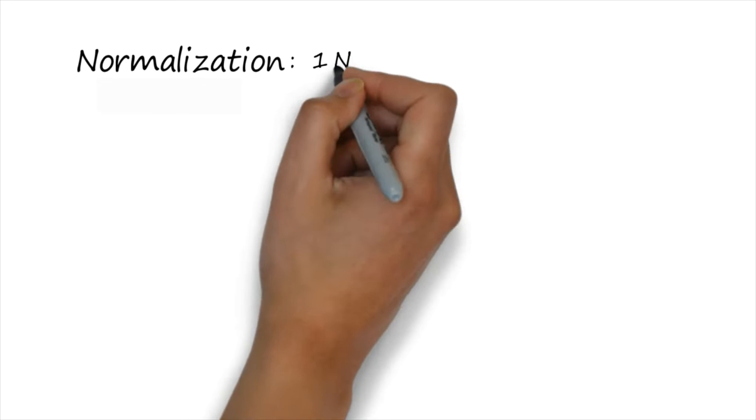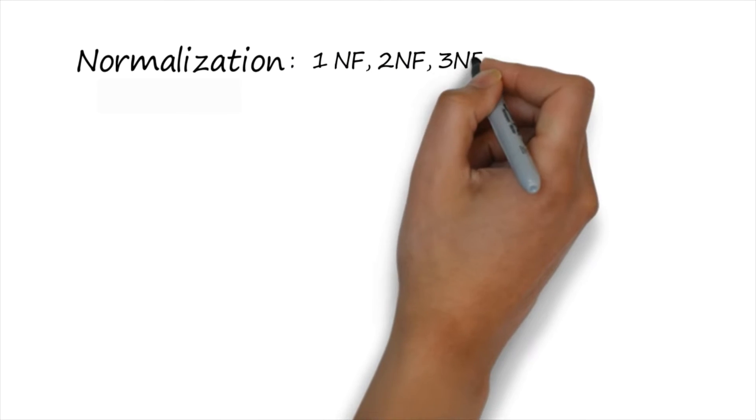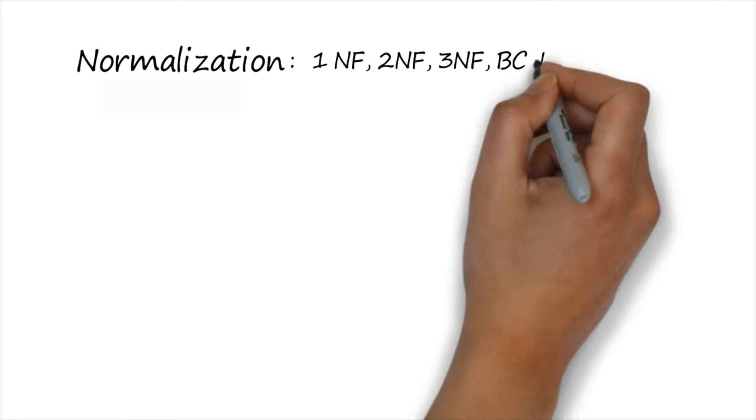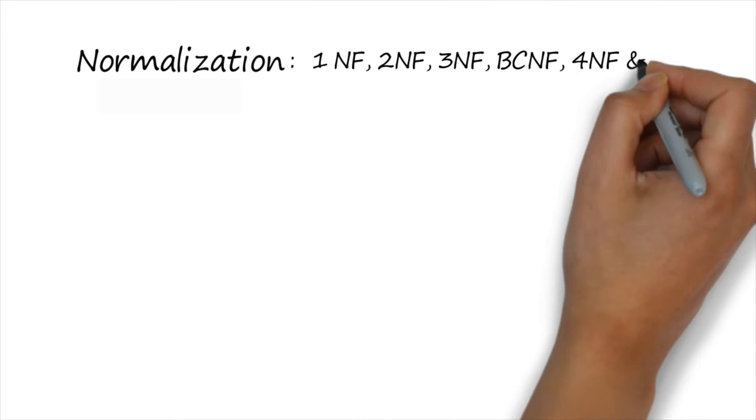Today our topic of discussion is normalization. We have many normal forms in database management systems: first normal form, second normal form, third normal form, then BCNF, 4NF, and 5NF. These are the available normal forms for database management systems.